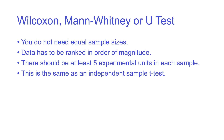Here's a dataset from periwinkles on a beach in Port Scrawl, which is in Wales. Periwinkles are small sea snails that you find within the sand on beaches. They've been collected from two different regions of the beach — the lower shore and the mid shore — and measured in millimetres. The question is: is there a difference in size between the lower shore and the mid shore?